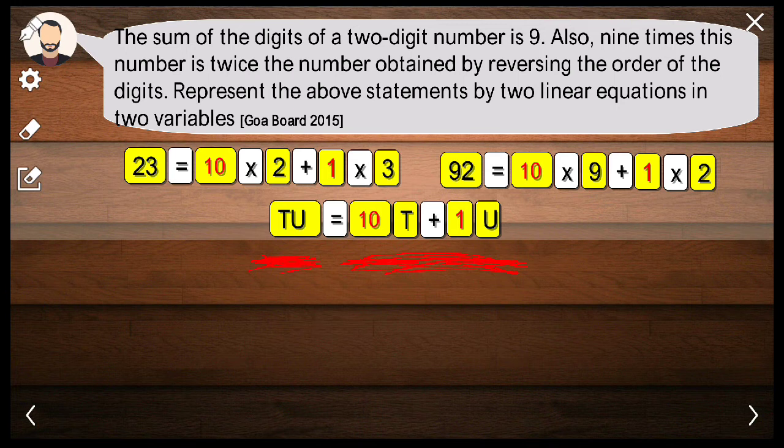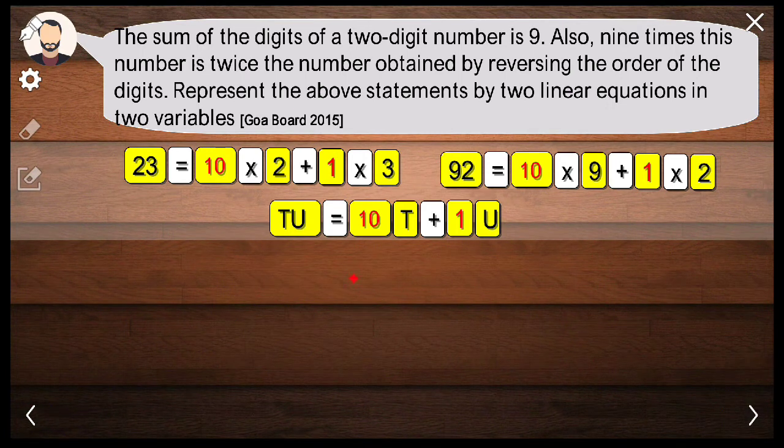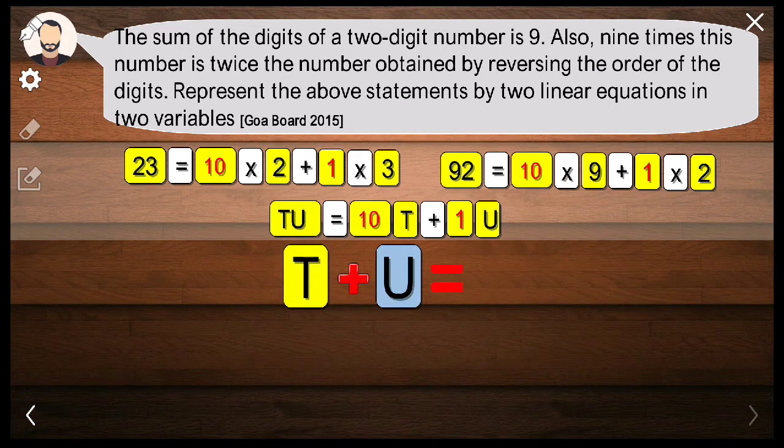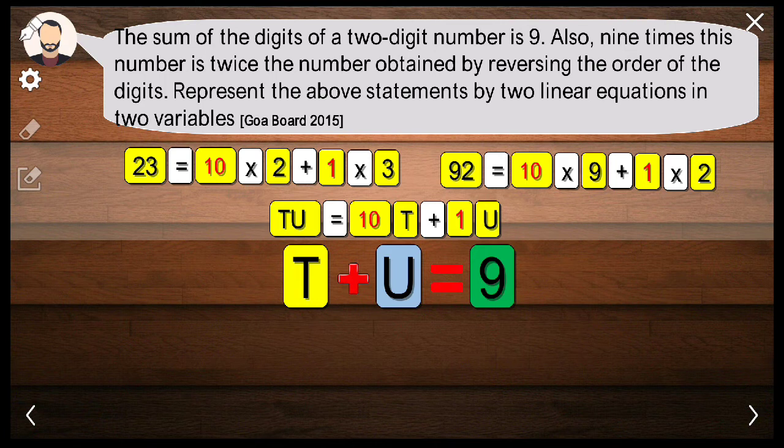In this question, the sum of the digits of a two-digit number is 9, which means we are talking about these two digits. So T plus U is equal to 9. That's the first part of this entire sentence.